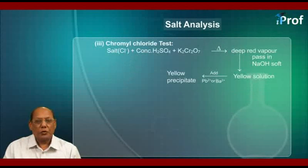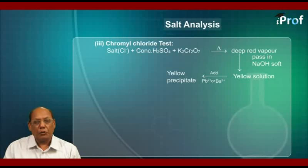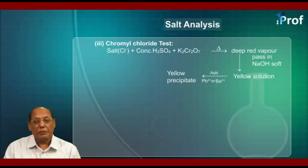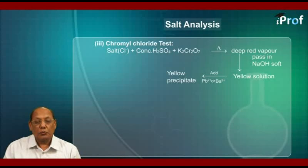A very important confirmatory test for chloride ion is the chromyl chloride test. Here, take the salt containing chloride ion, add concentrated sulfuric acid and potassium dichromate, and heat the mixture. Deep red vapors are produced. Pass these vapors into NaOH solution — the solution becomes yellow. To that yellow solution, add lead ions or barium ions, and a yellow precipitate is formed.